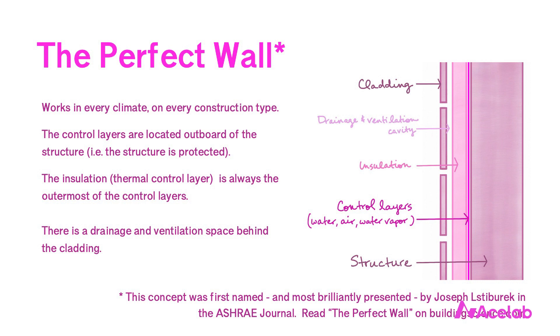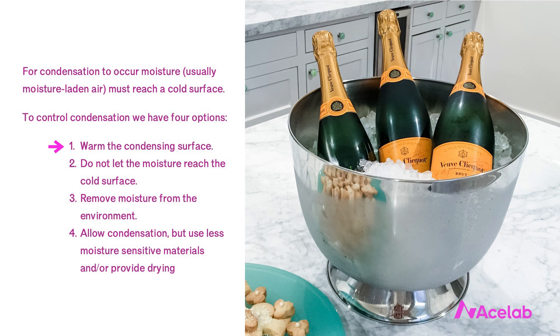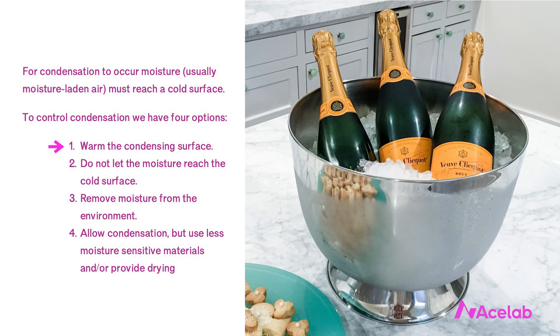With the perfect wall, vapor control isn't actually all that important. Whatever materials we use to control water and air could be permeable or impermeable, and the wall would still work, because we're controlling condensation using insulation. So what's all the fuss about the permeance of building materials? We tend to prefer vapor-open materials so that our walls can dry in both directions. But we don't always design the perfect wall — exterior insulation is expensive, and the perfect wall may not always meet our aesthetic intent. When we split up the control layers and move them around, we often need to add new control layers to address new cold surfaces.